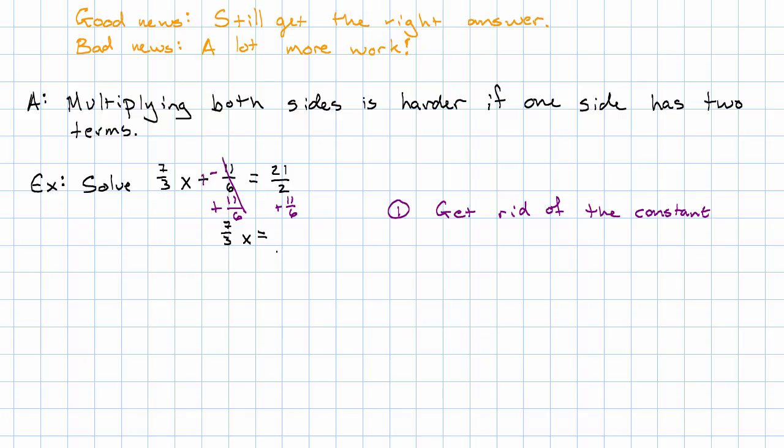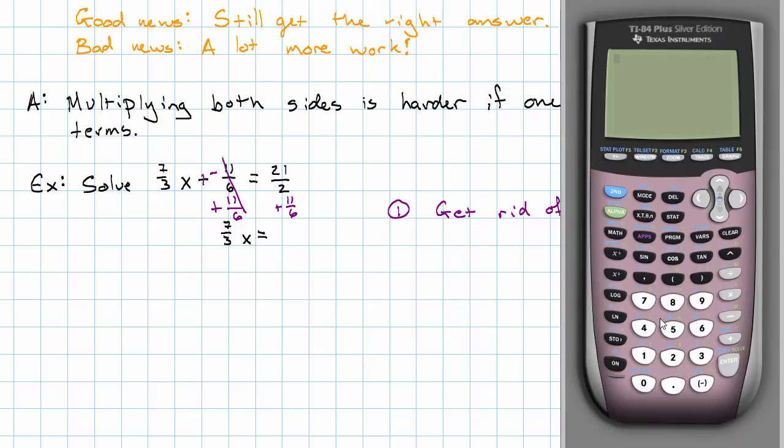And I'm just left with 7 thirds x. On the right, I think that looks like a job for my calculator. I'm just going to take my 21 halves plus 11 sixths and give my answer as a fraction. So that's 37 thirds.